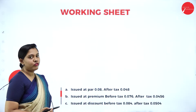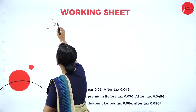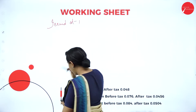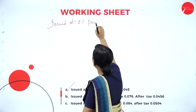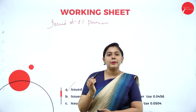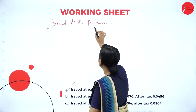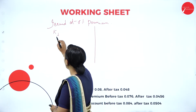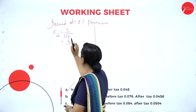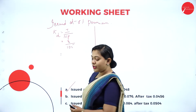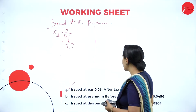Now let us calculate issued at a premium of 5%. Premium is nothing but an extra amount, so 100 into 5% is Rs. 5, making 105 rupees your net proceeds. Interest remains the same at Rs. 8. Using the formula — interest divided by net proceeds — that is 8 divided by 105, the answer is 0.076. This is the before tax cost of debt issued at a premium.